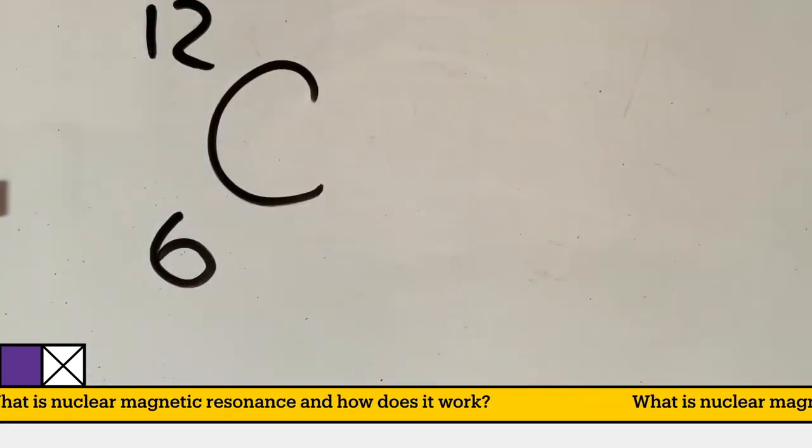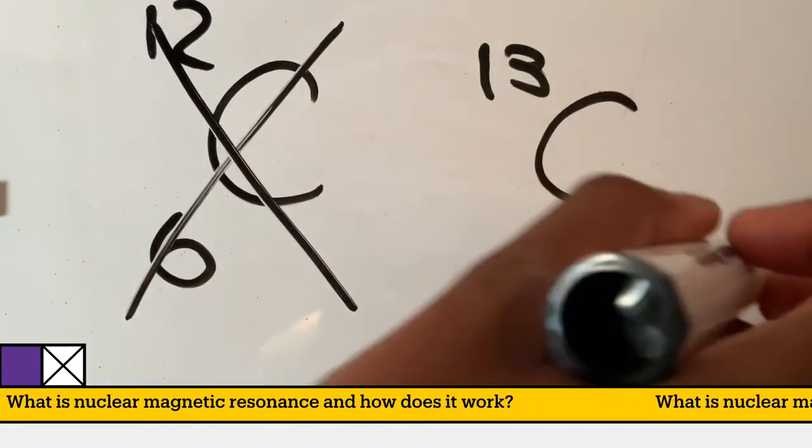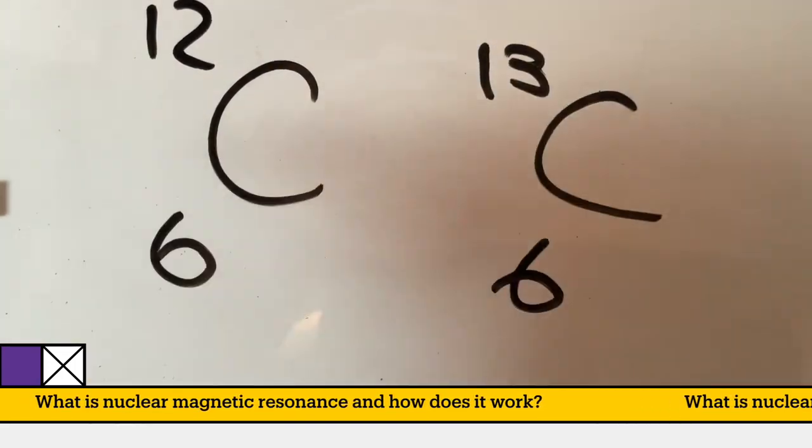When an atom has an odd mass number, which is the sum of its protons and neutrons, they attain a property called spin. This makes them observable using nuclear magnetic resonance.